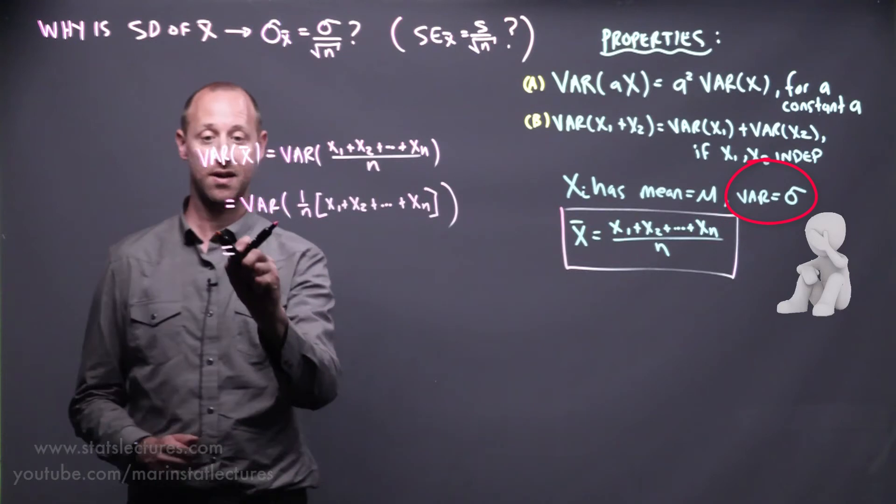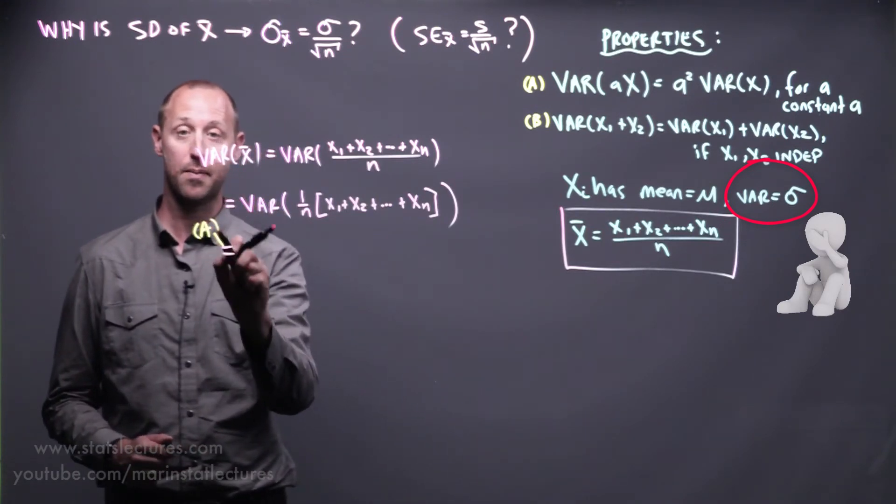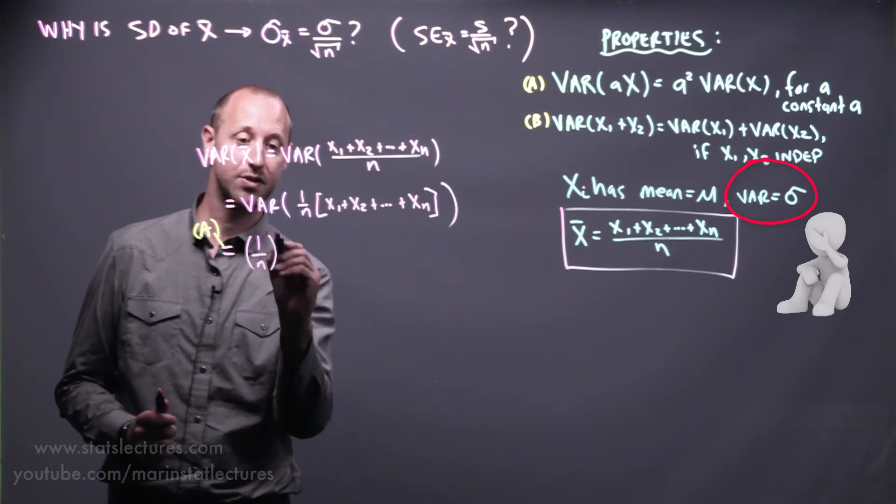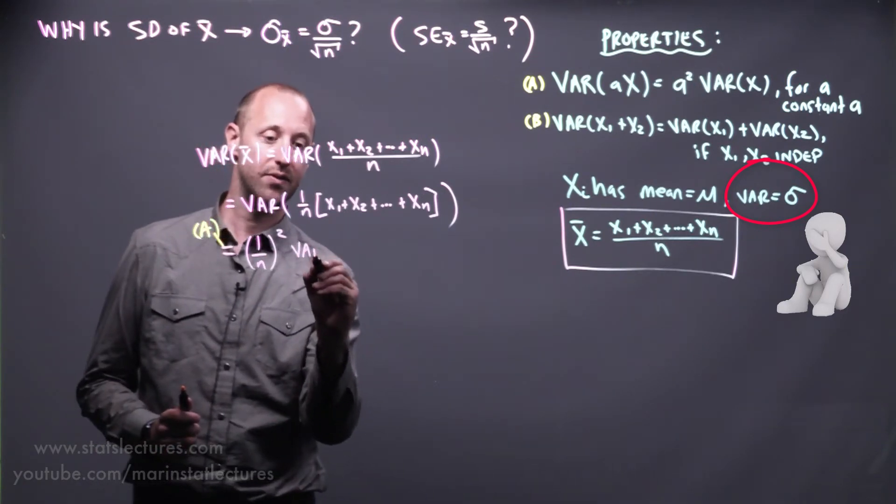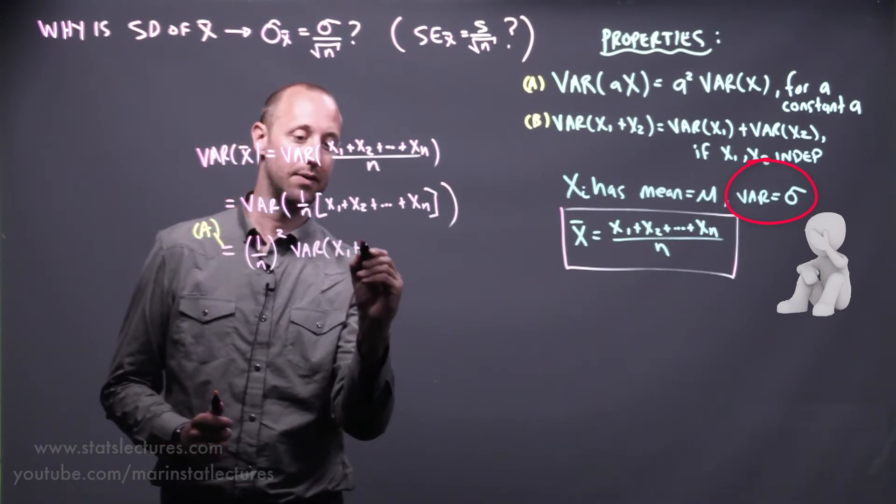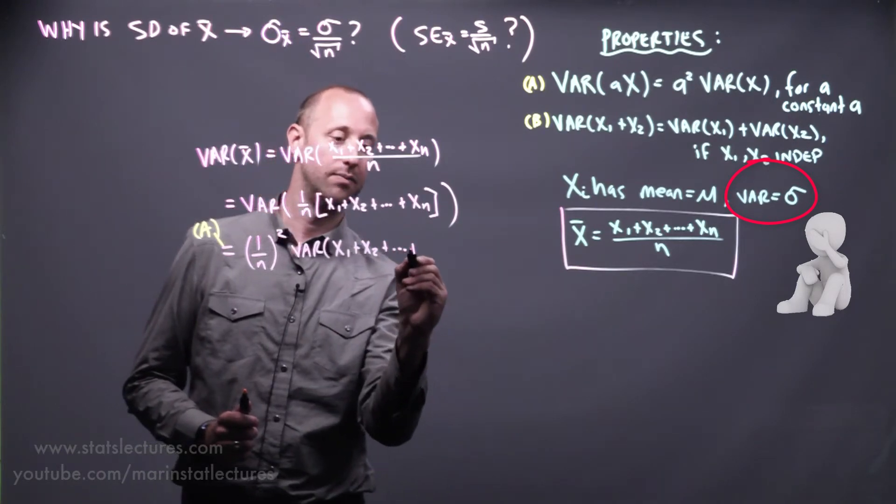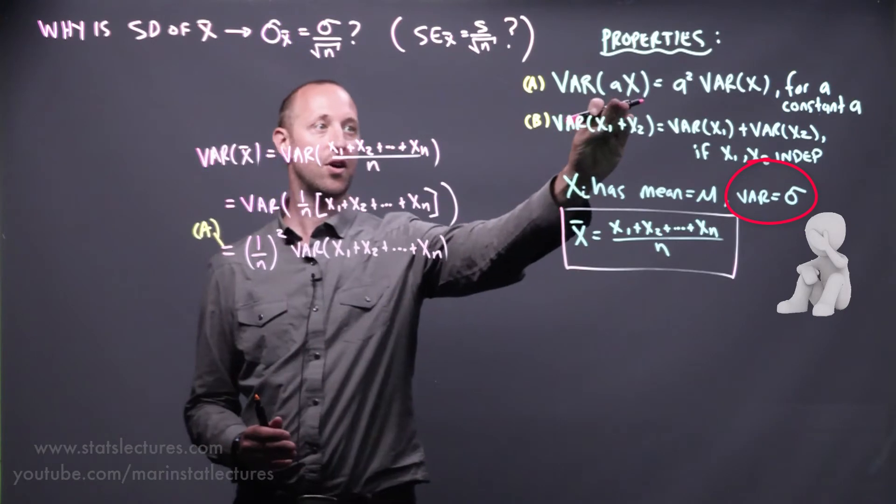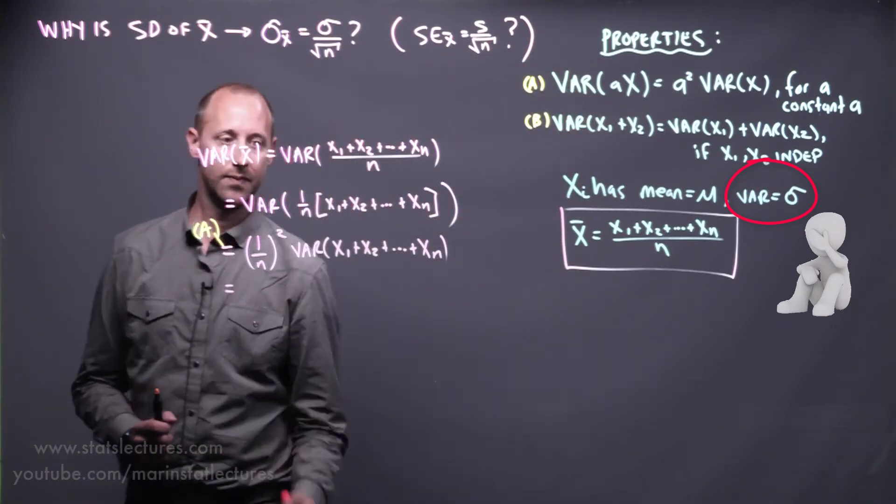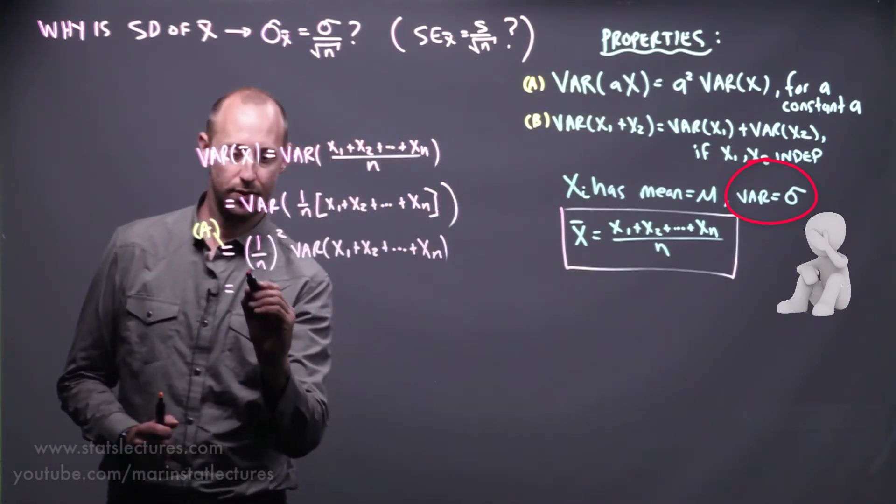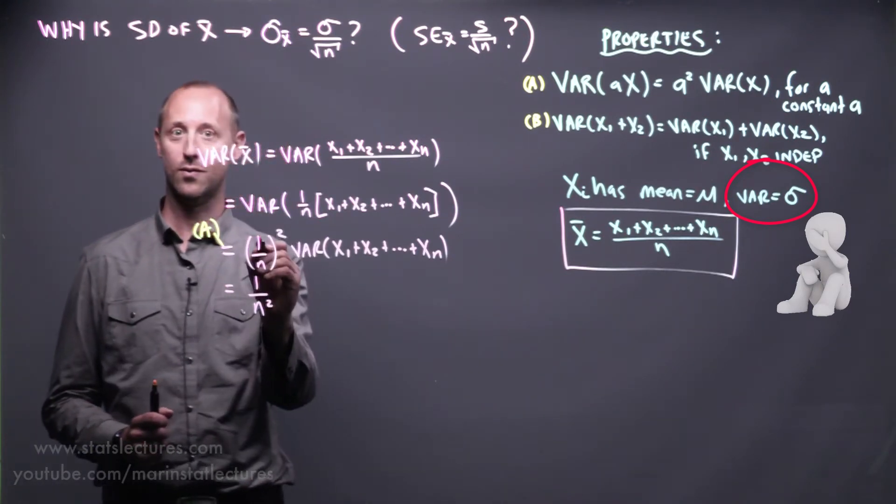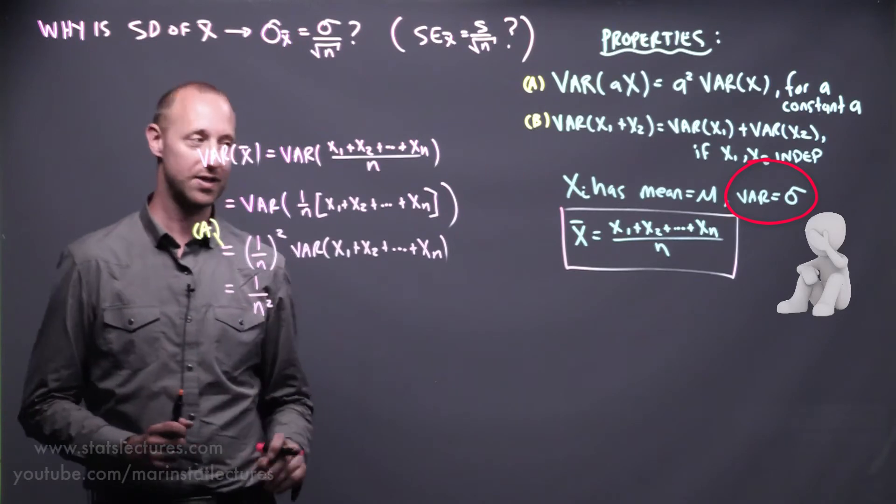Then, making use of what I've labeled up there property A, we can write this as 1 over n squared times the variance of x1 plus x2 all the way up to xn. I've just taken the constant out of the variance. So I'm going to simplify this to 1 over n squared. 1 squared is 1 over n squared.